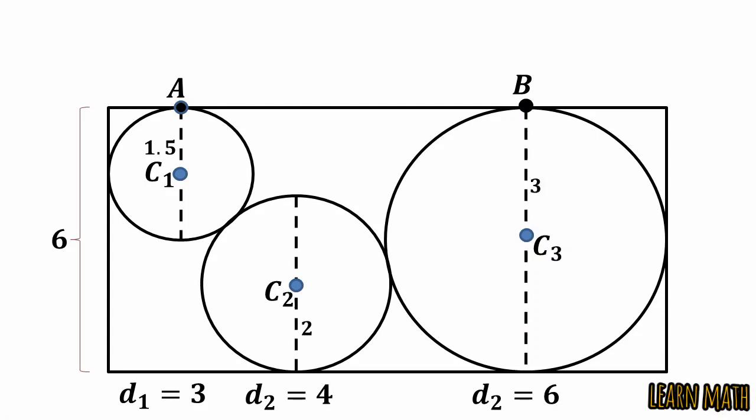Now from C1 to C2, this line will be 1.5 plus 2, so this will be 3.5. Why? Because this is 1.5 and this is 2, so the whole length C1C2 is 3.5. So parallel to this we will take ED and that will also be 3.5.